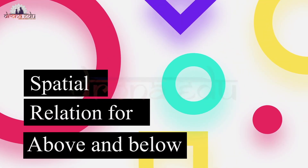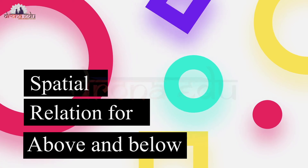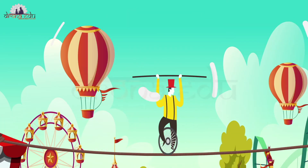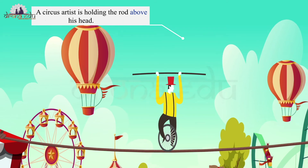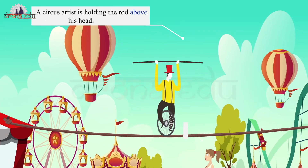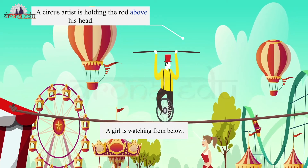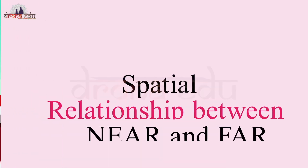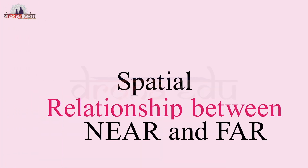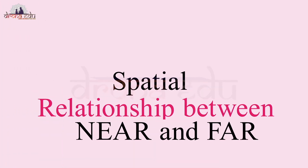Similarly, let's see the spatial relation for above and below. Look at this picture — you can see that the circus artist is holding the rod above, whereas a girl is watching from below.